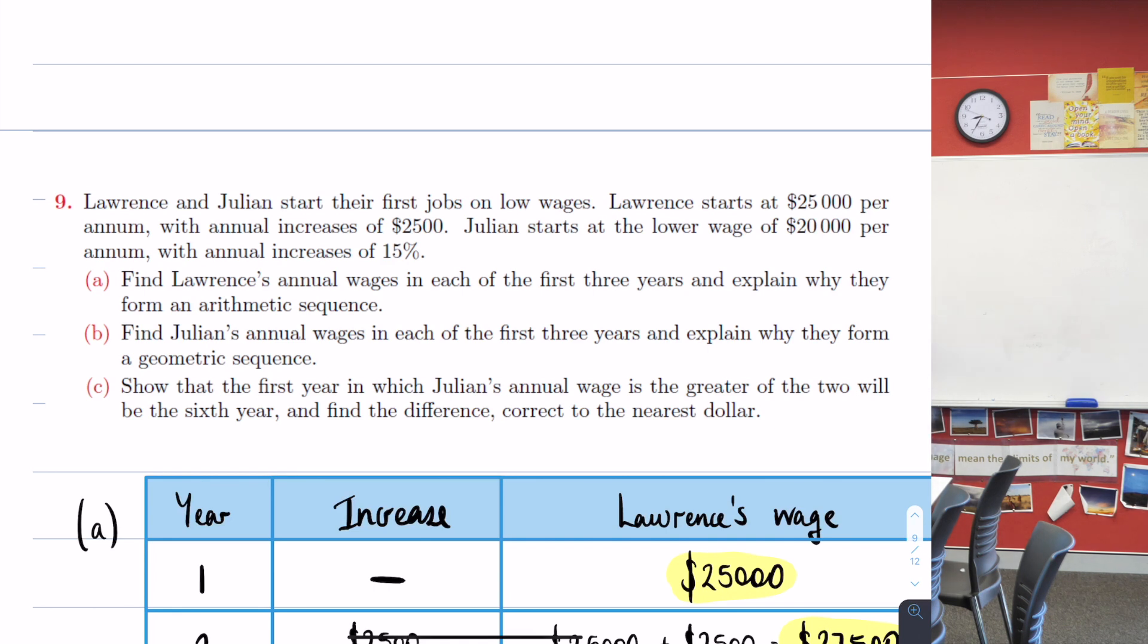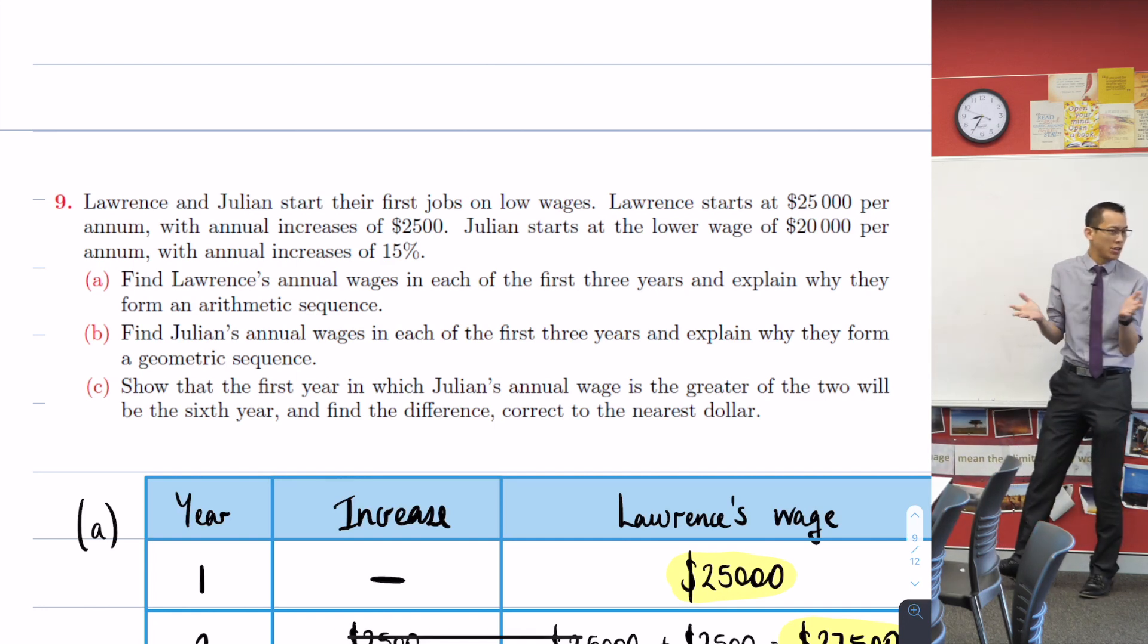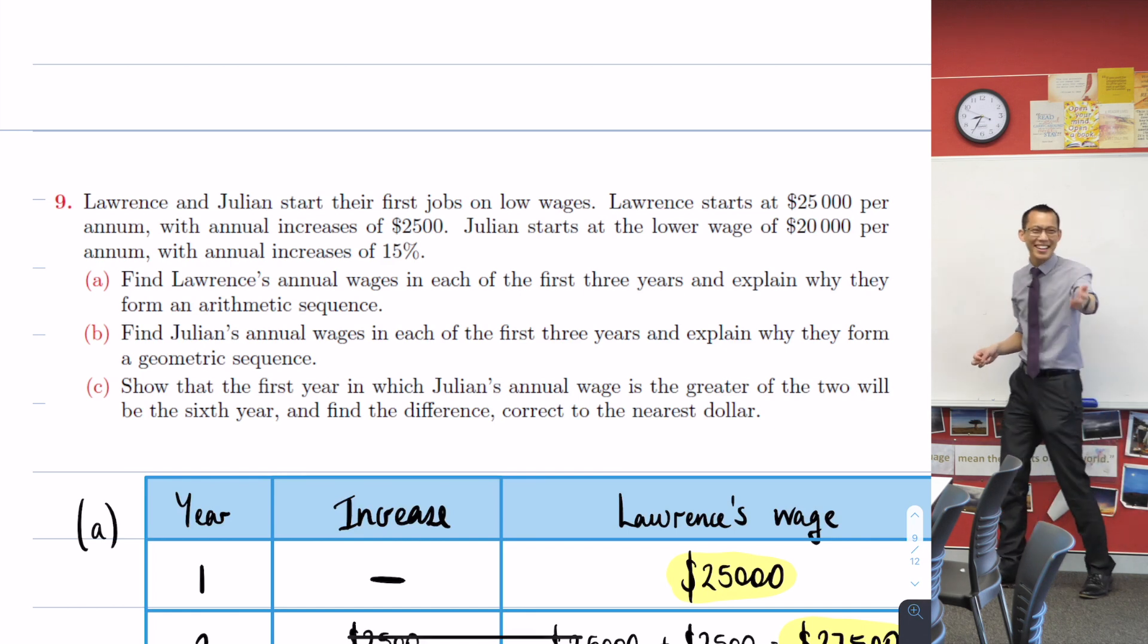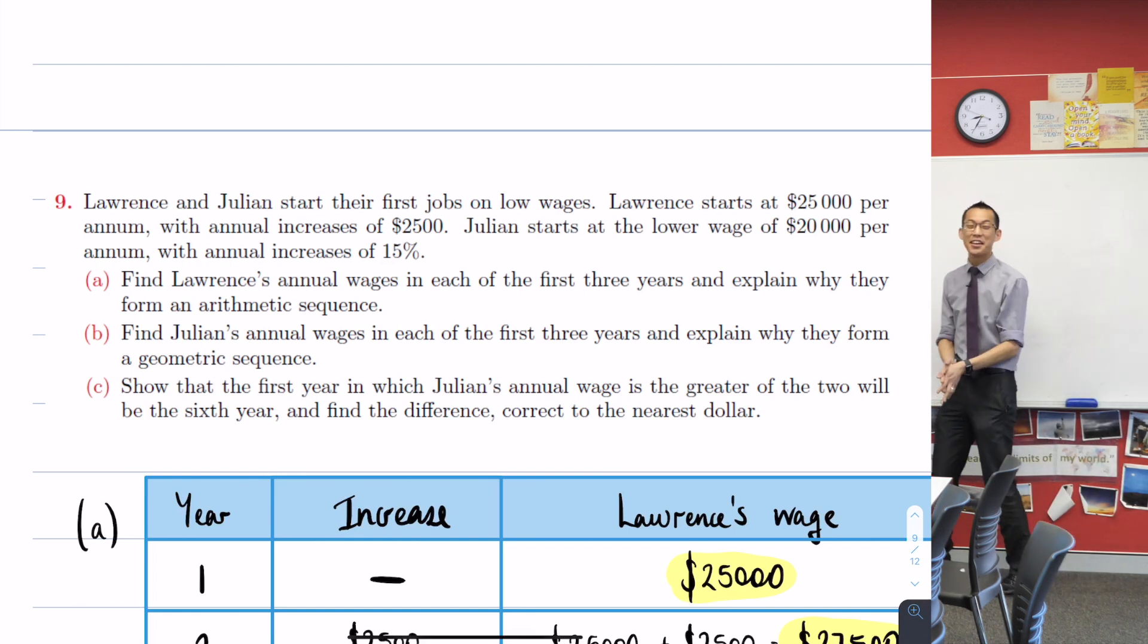And then you've got Julian whose wage increases by a set percentage because a percentage changes in size based on what it's a percentage of. You don't get an arithmetic sequence out of that. What do you get? You get a geometric progression, GP for short.